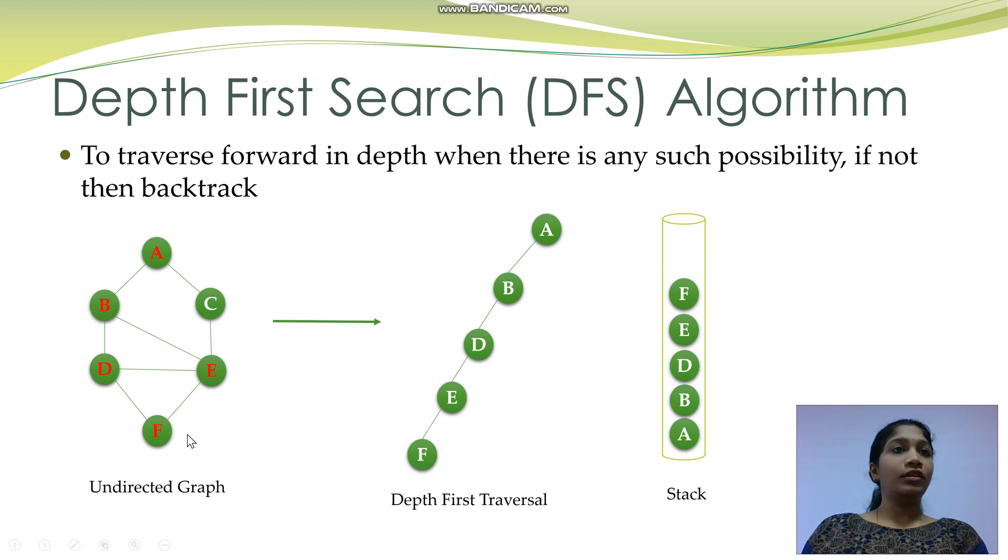From F, there are no unvisited nodes. So I will have to backtrack to E, which means I will have to pop F from the stack. From E, there is one unvisited vertex which is C. Push C into the stack and mark it as visited.